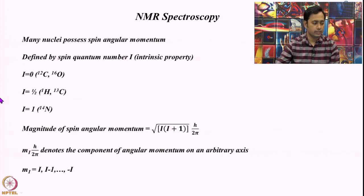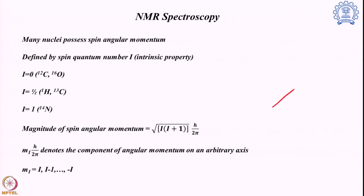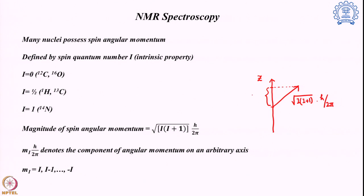Let us define what that means. For any particular direction, the spin angular momentum has a magnitude of √(i(i+1)) · (h/2π). However, if we want to find its value along a particular axis — say the z-axis — we find the projection of the spin angular momentum on that axis. These projections can only take particular values from +i to −i, and those are the m_i values.